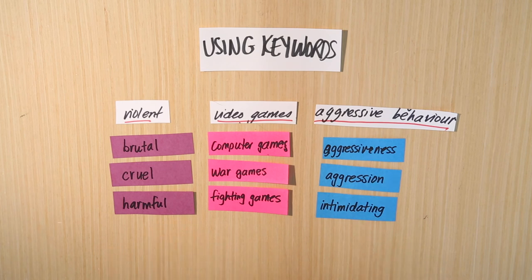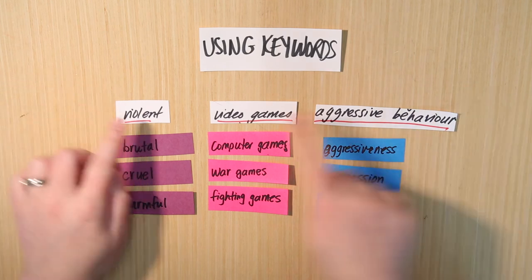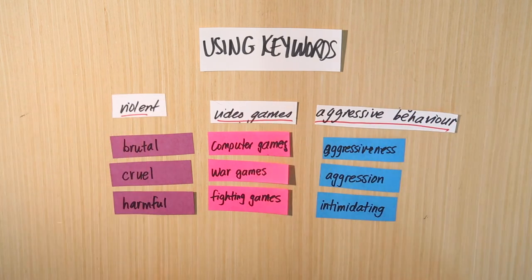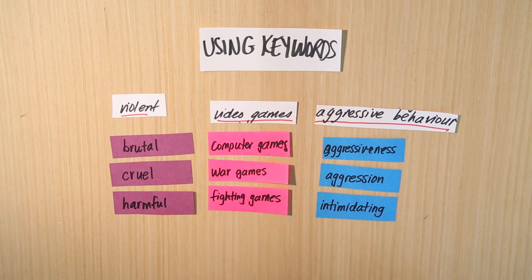During this process, what you're doing is taking your research question, breaking it down into its main components, and then brainstorming for each one the different words an author could have used to write about that topic. As soon as this video is done, you'll have an activity to complete where you go through that same process on your own using your actual research question. After that, we'll go into PsychInfo, start inputting those keywords, and actually get some results.